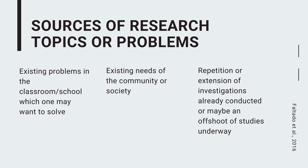Another source can be from different fields of interest or specializations. Also, existing problems in the classroom or school which one may want to solve are good sources of research problems. Aside from subjects, problems identified per subject can lead to research, and eventually a program may be created because of it. You may also observe outside — existing needs of the community or society can also become a research topic and research problem. If a problem is identified in the community, then study about it and write an academic paper about it.